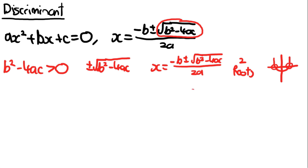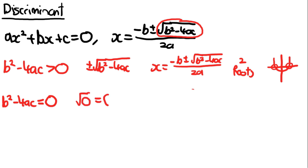But what happens if b squared minus 4ac is actually equal to 0? Well, you're just going to be square rooting 0, which is also equal to 0.